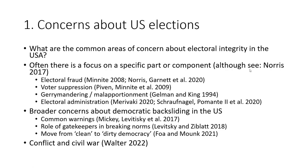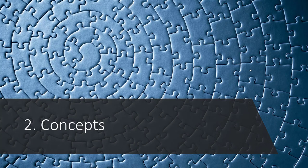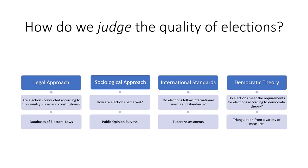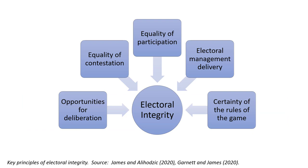If we want to evaluate the quality of US elections, we need to have some clear concepts in front of us. Scholars have developed different ways to judge the quality of elections. We prefer the democratic theory approach: we have elections for a reason — we want democracy and democratic principles to be upheld. Hence, we develop electoral integrity principles that we also want to be upheld if we want an election to be said to be supporting democracy.